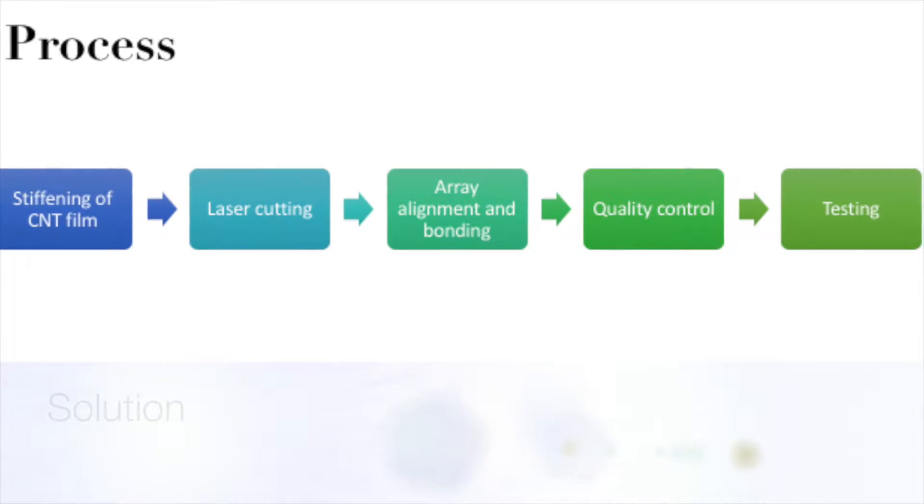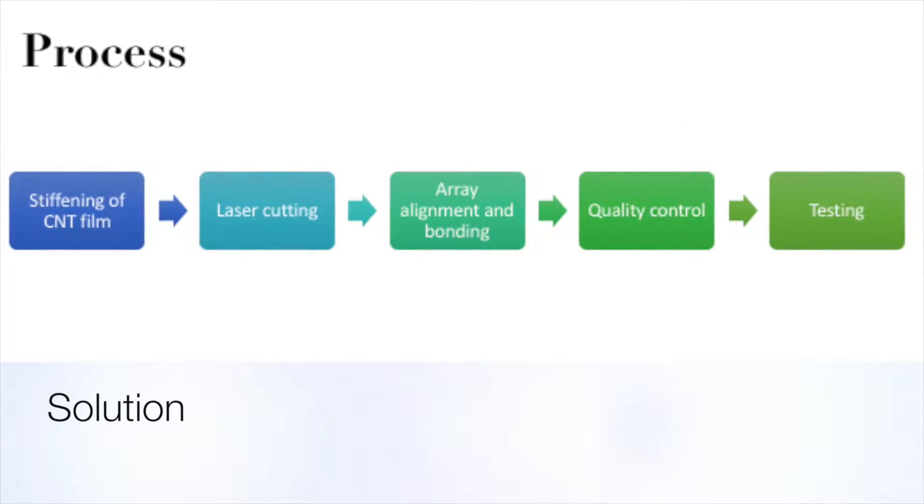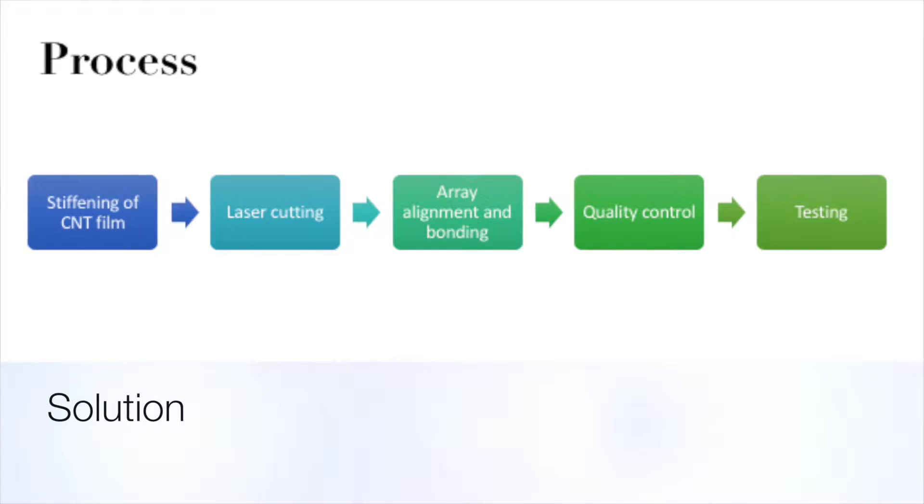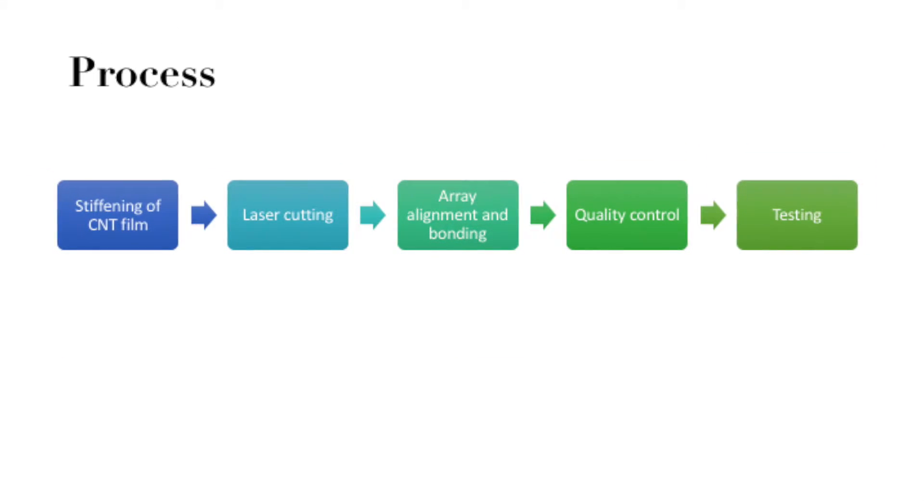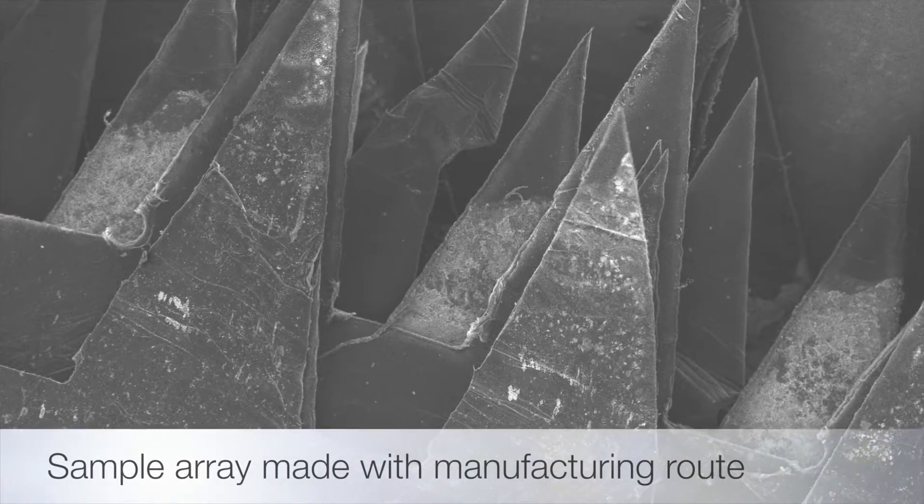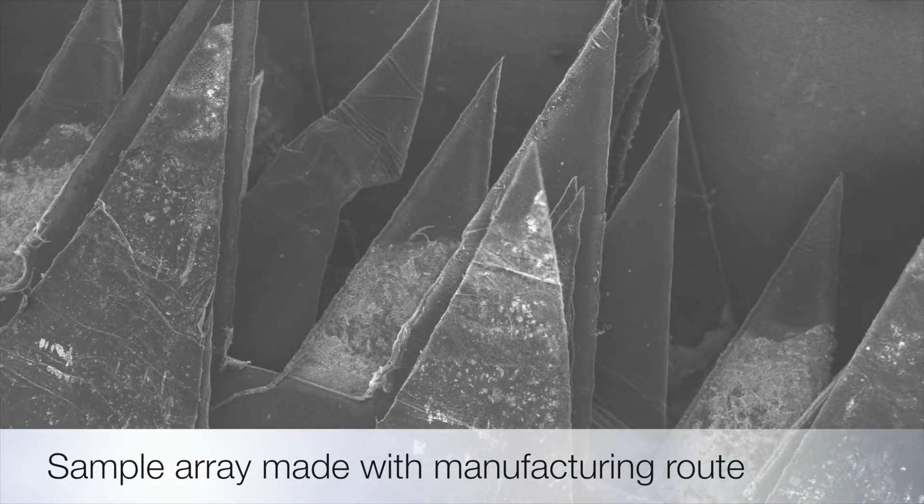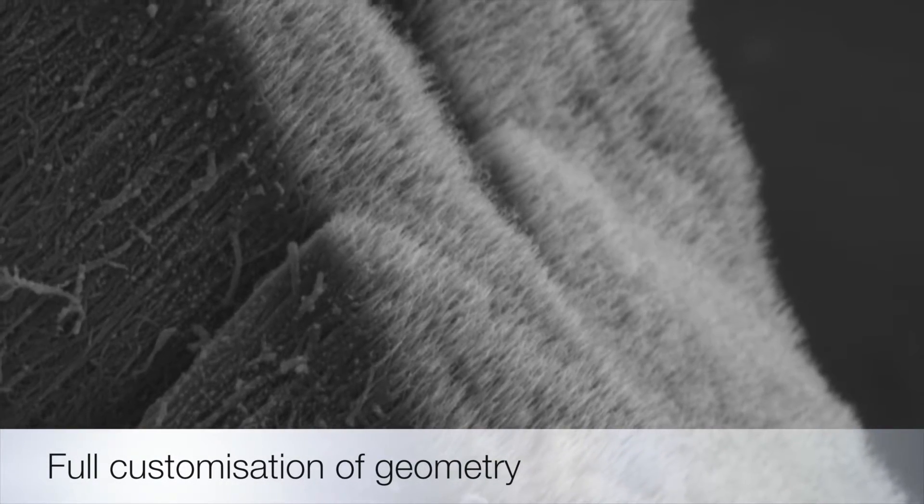To solve this problem, I've developed a new manufacturing route which stiffens the material and makes it easy to handle, and then it is processed to manufacture a repeatable array, which then undergoes quality control and field emission testing. The great thing about this process is that we have full control over geometry and dimensions, which allows customization for compact, reliable devices. Thank you for listening.